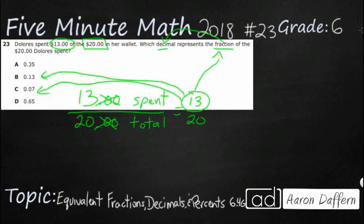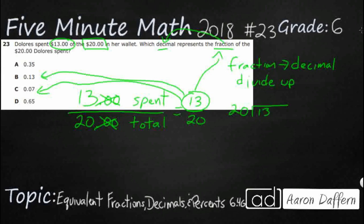So how do we change a fraction to a decimal? There are two different ways. We'll start with the way that always works, and that is dividing up. Sometimes you can change to a denominator of 10, 100, or 1,000 — we'll do that second. To divide up, our denominator becomes our divisor, and we divide that into the numerator, which becomes our dividend.